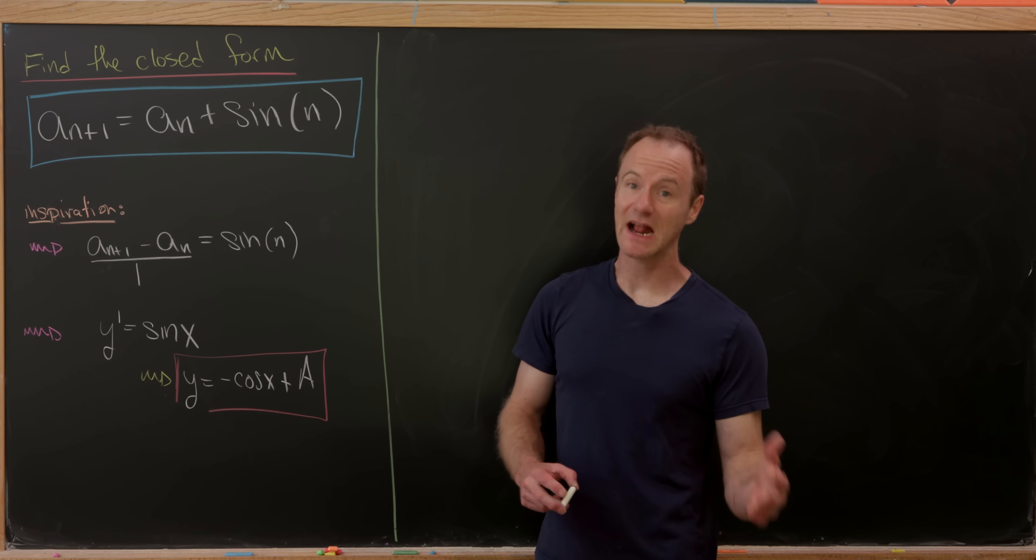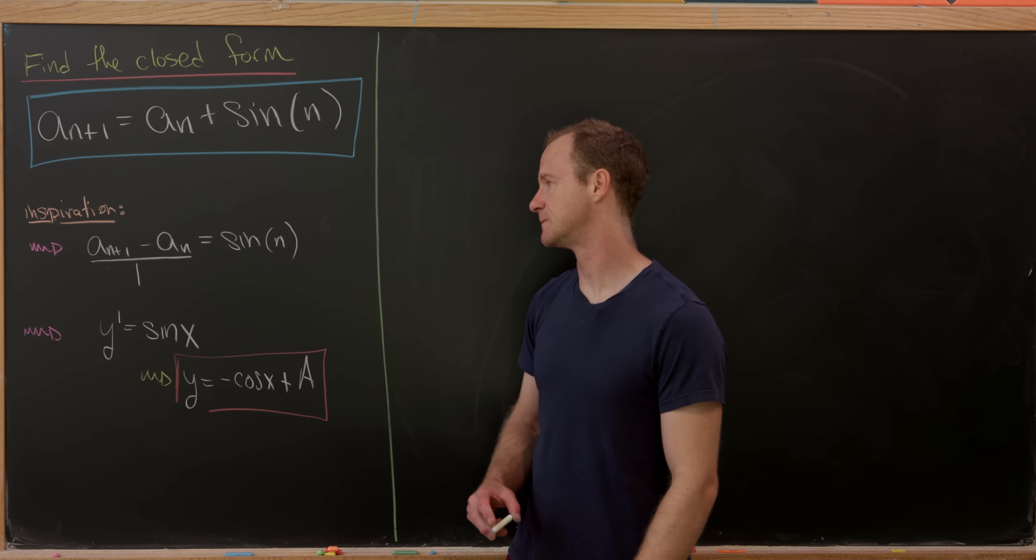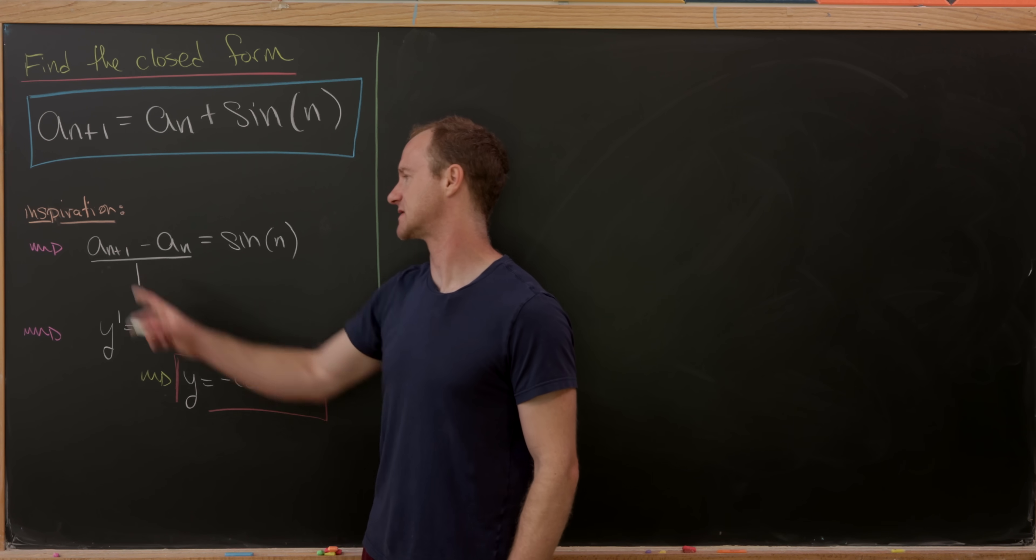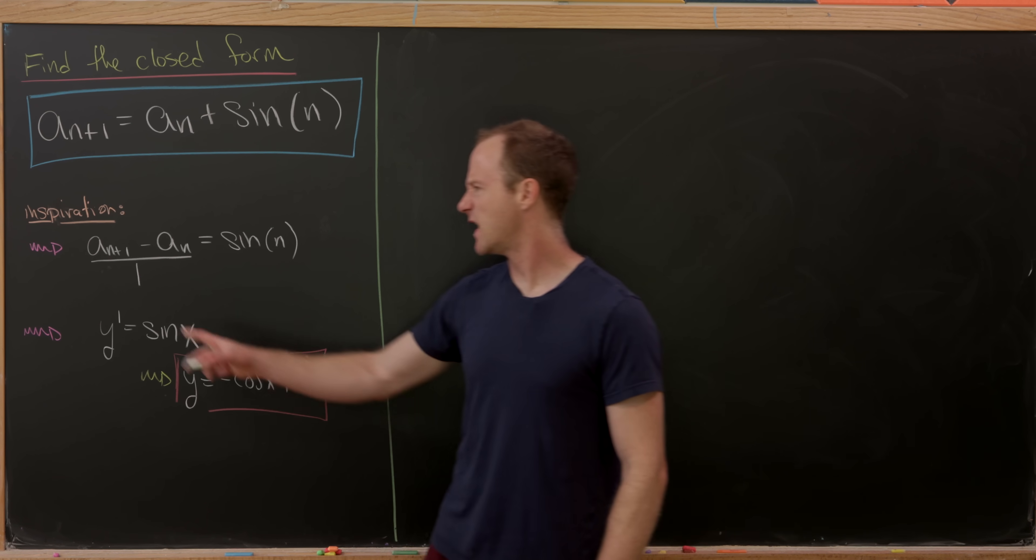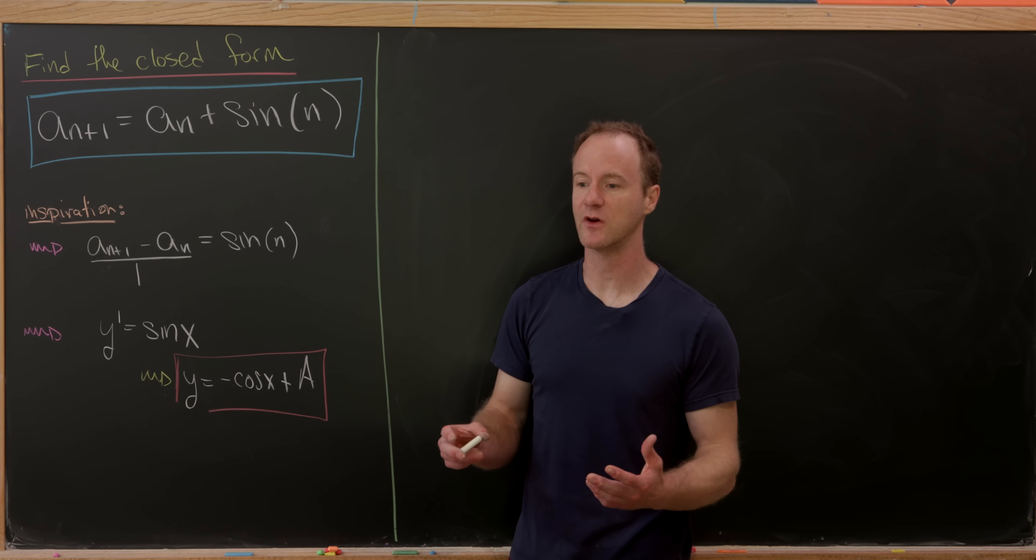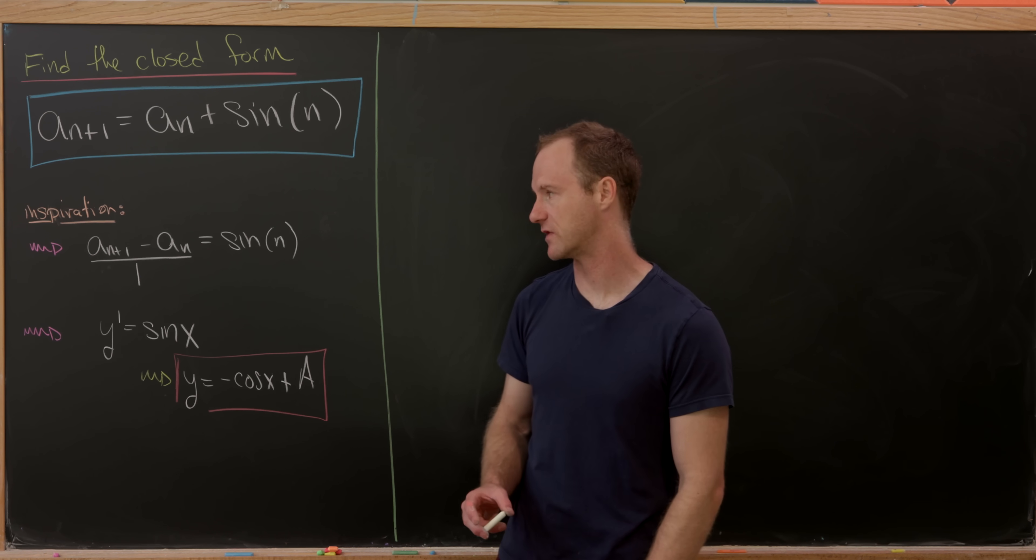But the technique will be to take inspiration from differential equations. So let's notice if we move this a n to the left hand side, we have a n plus 1 minus a n equals sine of n. But this difference of two terms in a sequence that are consecutive really feels like a derivative of maybe the sequence, and in fact it is, it's the so called discrete derivative.